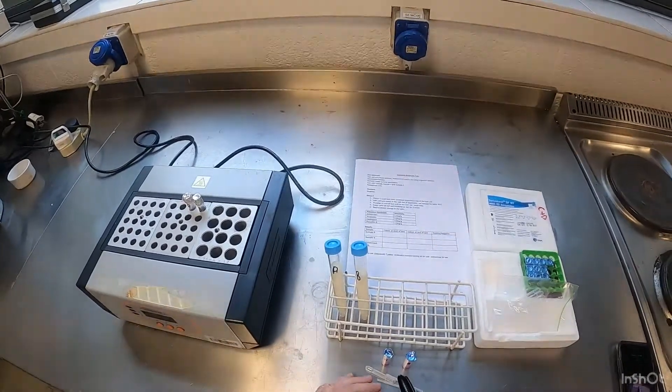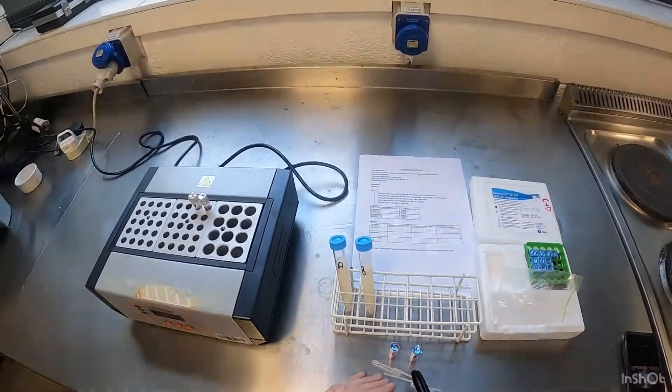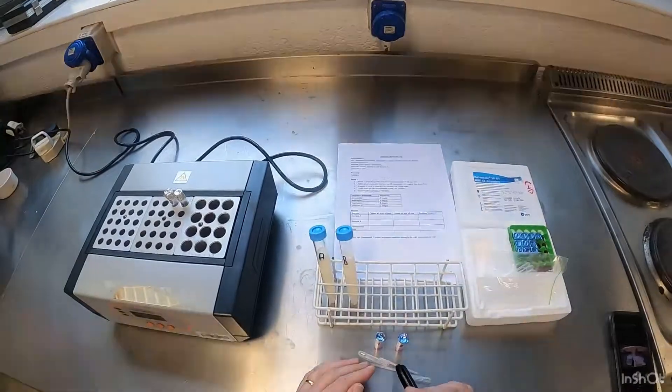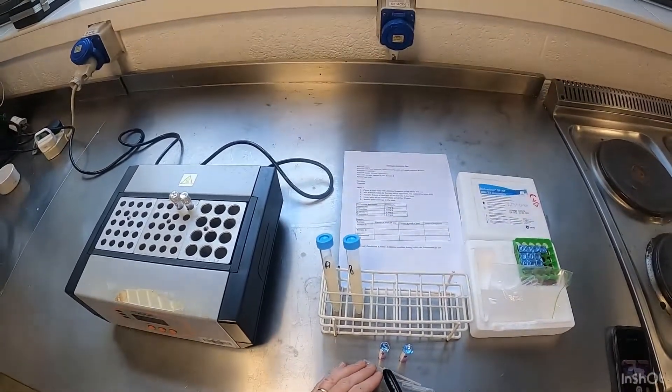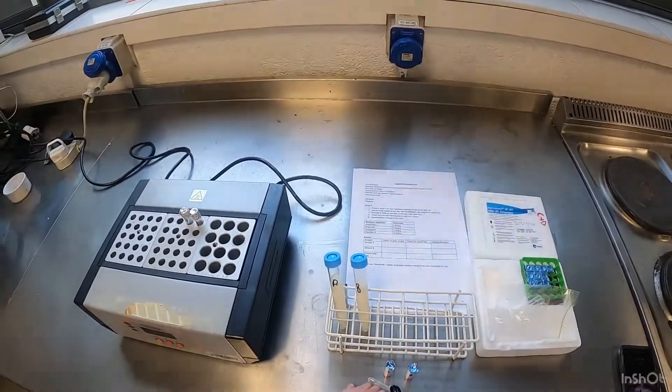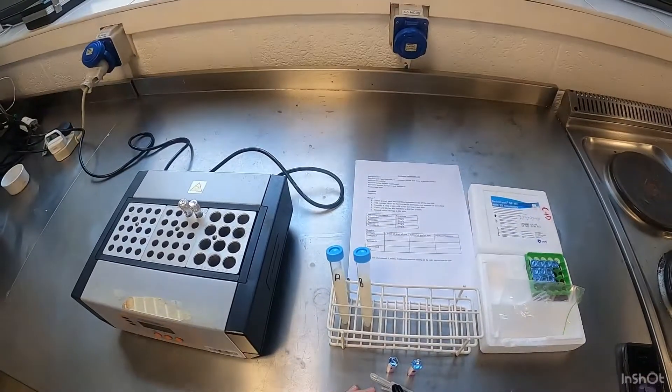If the colour is yellow, that means the bacteria had a chance to grow and there's no antibiotics. If the sample remains purple in colour, that means there was an antibiotic present because the bacteria did not get a chance to grow.